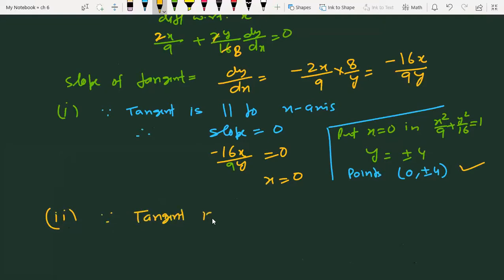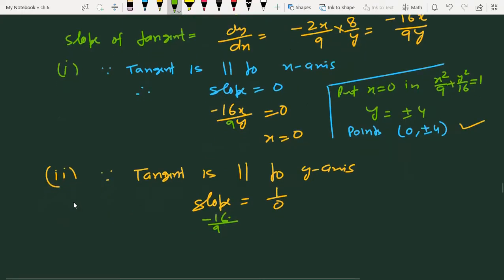Tangent is parallel to y-axis, so slope is undefined (1/0). So -16x/9y = 1/0. Cross multiplying, we get 9y = 0, so y = 0.